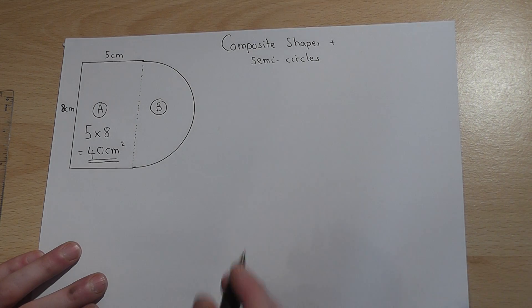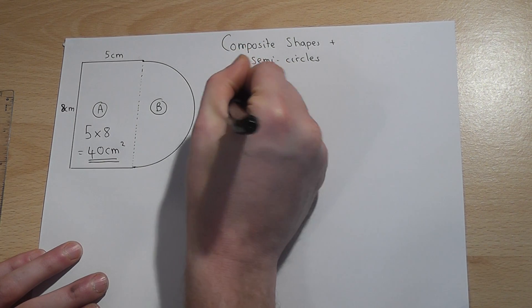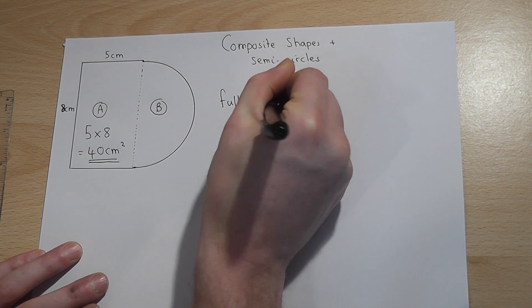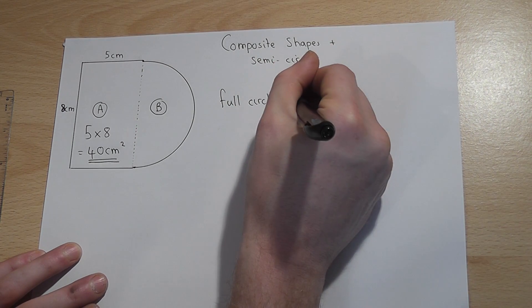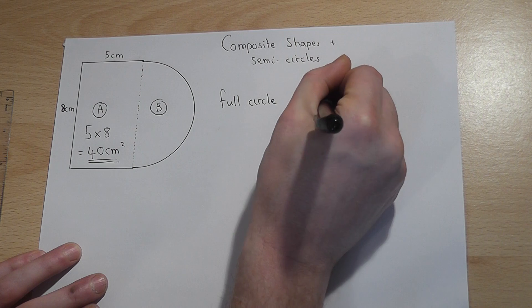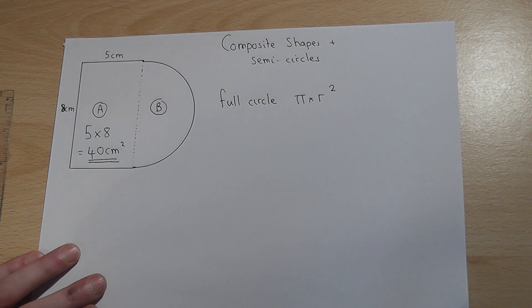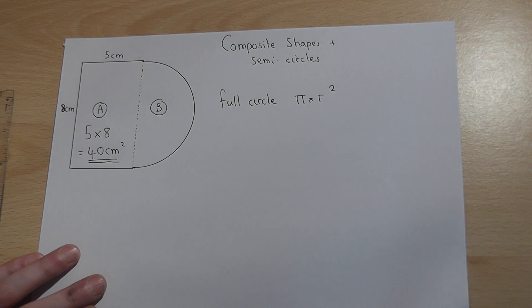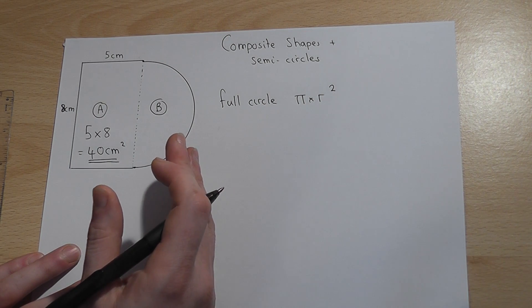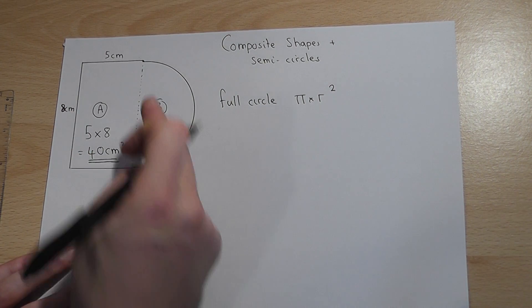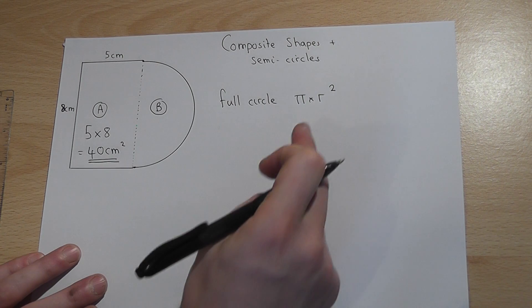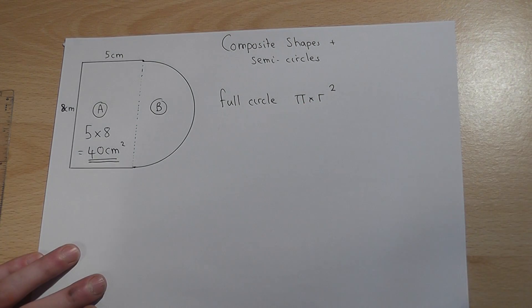Now we know if we have a full circle the area is pi times radius squared. This is a half circle so to find this area we treat it as a full circle using that formula there and then half the answer.